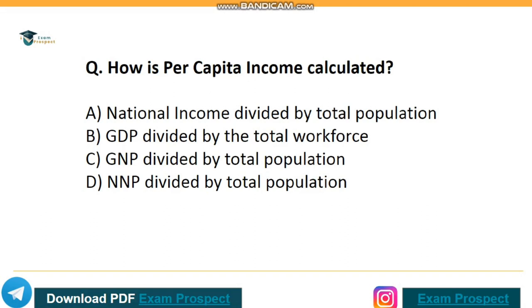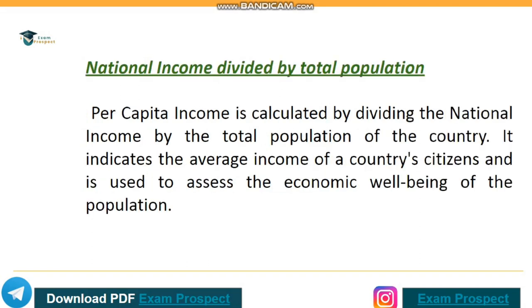How is per capita income calculated? Correct answer: option A, national income divided by total population. Per capita income is calculated by dividing the national income by the total population of the country. It indicates the average income of a country's citizens and is used to assess the economic well-being of the population.